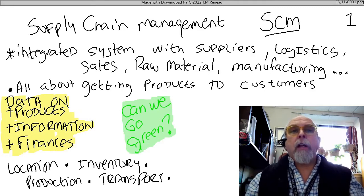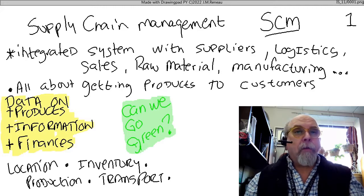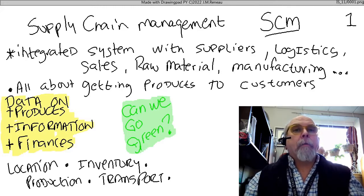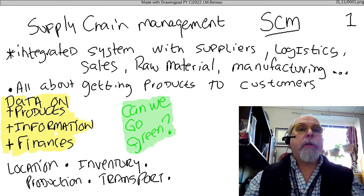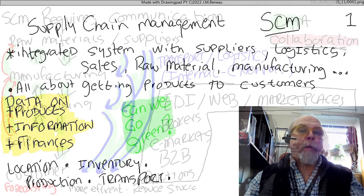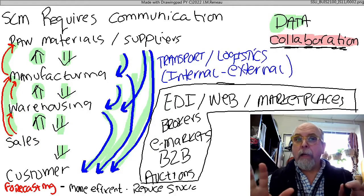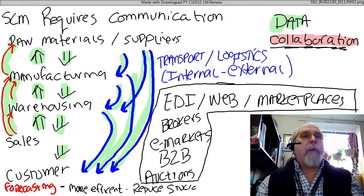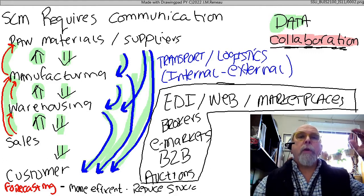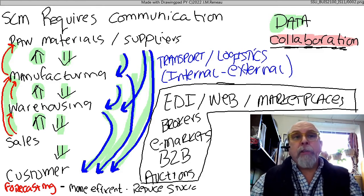This includes reducing unneeded transportation, reducing our environmental costs by reducing the size of our building footprints, and all of those kinds of things. These are all things that we can hopefully do with a good supply chain management software system.